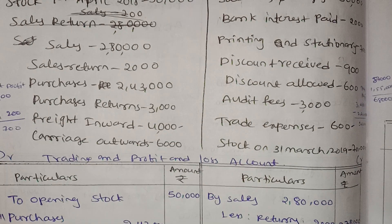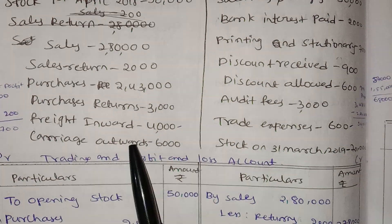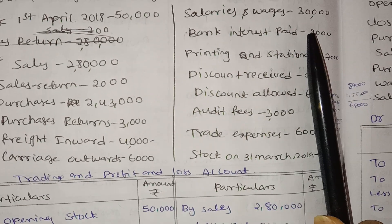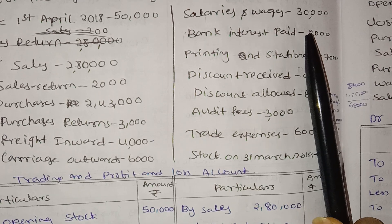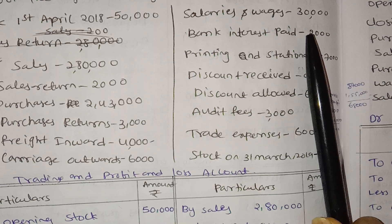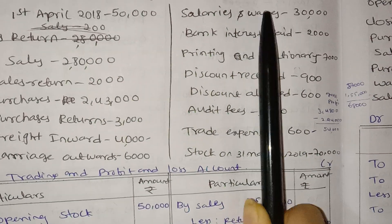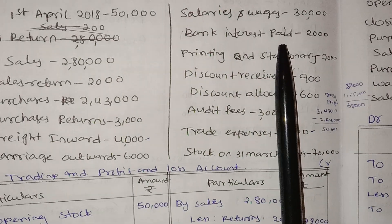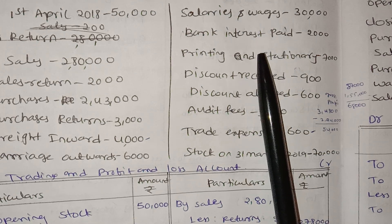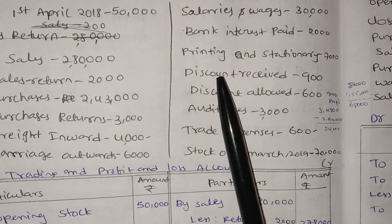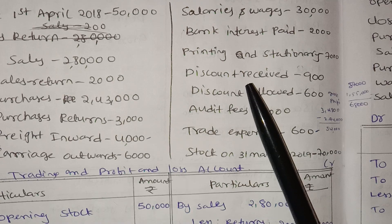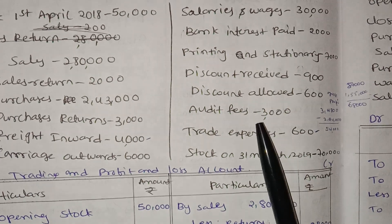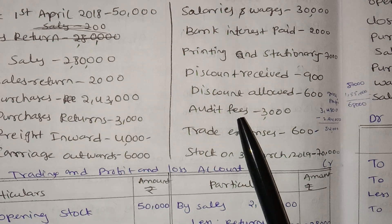Carriage outwards — we can go there; indirect expenses, which will be our expenses. Next, salaries and wages — we can go there. Indirect expenses — so we can go there. This is the profit and loss account debit side: bank interest paid; on the credit side: discount received, profit and loss income.